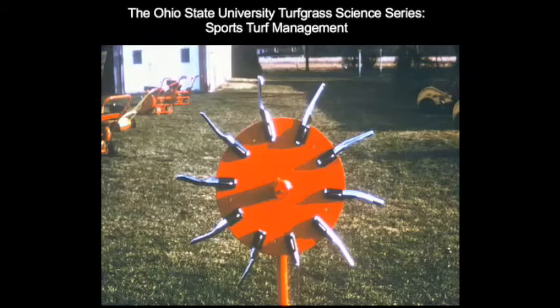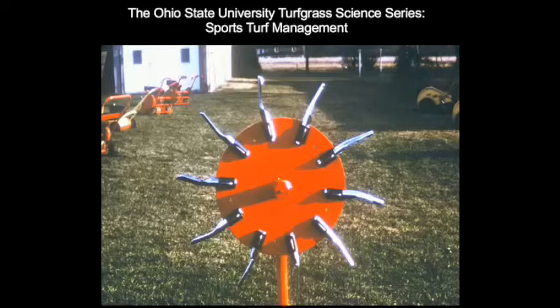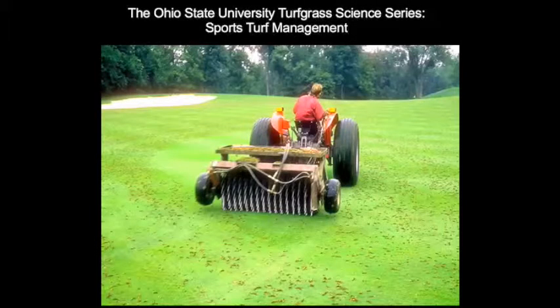The second type of coring tine is the spoon, which is mounted on a rotating drum as shown here.